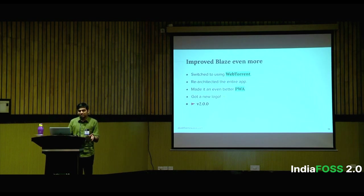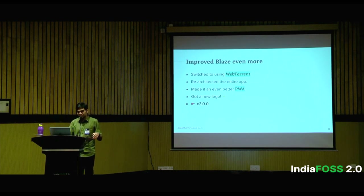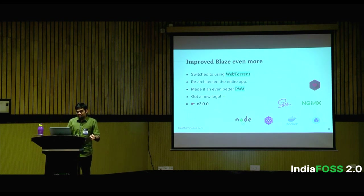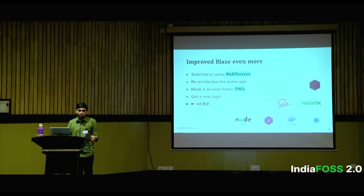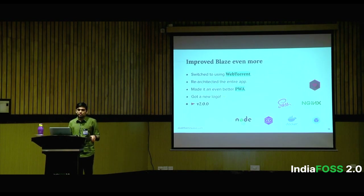I called this Blaze V2. Fun fact: there was never a V1 because V1 beta failed so badly and I had to re-architect everything, so I decided to call it V2. The power of open source — there are so many JavaScript libraries I'm using. Because of the openness and people contributing, it's so easy to swap out libraries and build more abstractions around them. I think that's one of the bigger pros of open source that is often overlooked.